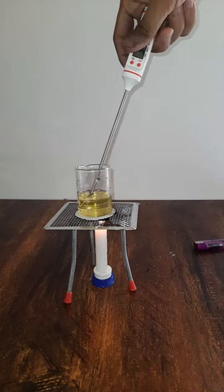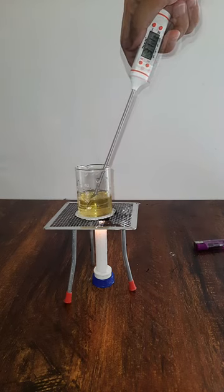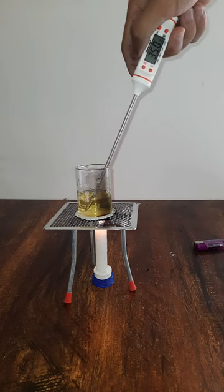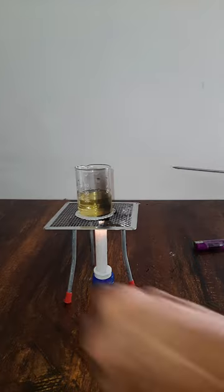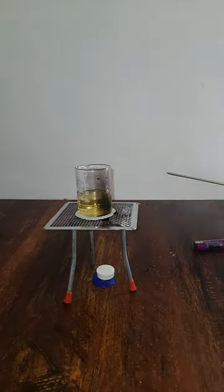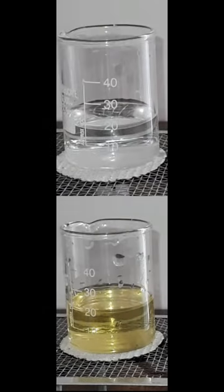I've started the timer already and also started looking at the temperature in the thermometer. So it has reached 35. So it took 46 seconds. It took 46 seconds for 20 ml of oil to change its temperature from 30.5 to 35 degrees Celsius. Why was there a time difference? Why did the oil take less time than water? What do you think?